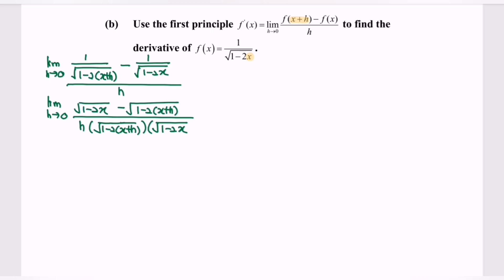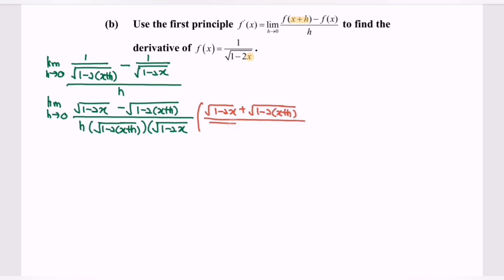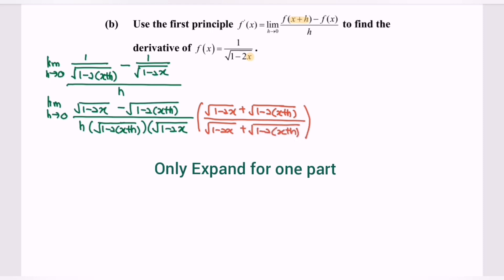The conjugate will be square root of 1 minus 2x plus square root of 1 minus 2 multiplied by (x plus h). So in this case, we only expand one part — my focus will be the numerator part.